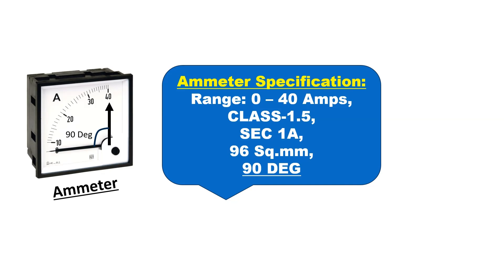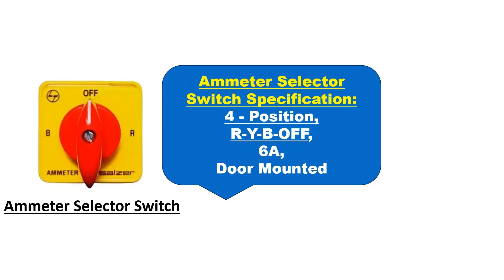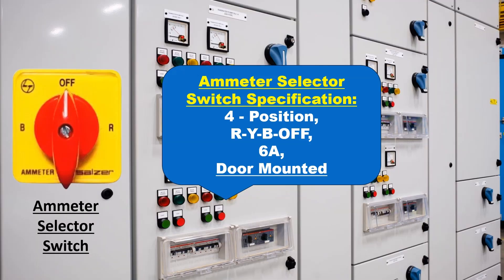96 square mm indicates the physical dimensions of the ammeter's front panel. 90 degrees means the display is intended to be read at a 90-degree angle from the standard position, which is important for panel mounting and ensuring the meter is viewed from the correct angle. For the ammeter selector switch: 4 positions means there are 4 selectable options — R, Y, B, and off. 6A means the selector switch can handle a maximum current rating of 6A. This selector switch is designed to mount on the door of an electrical panel, hence it is mentioned as door mounted.